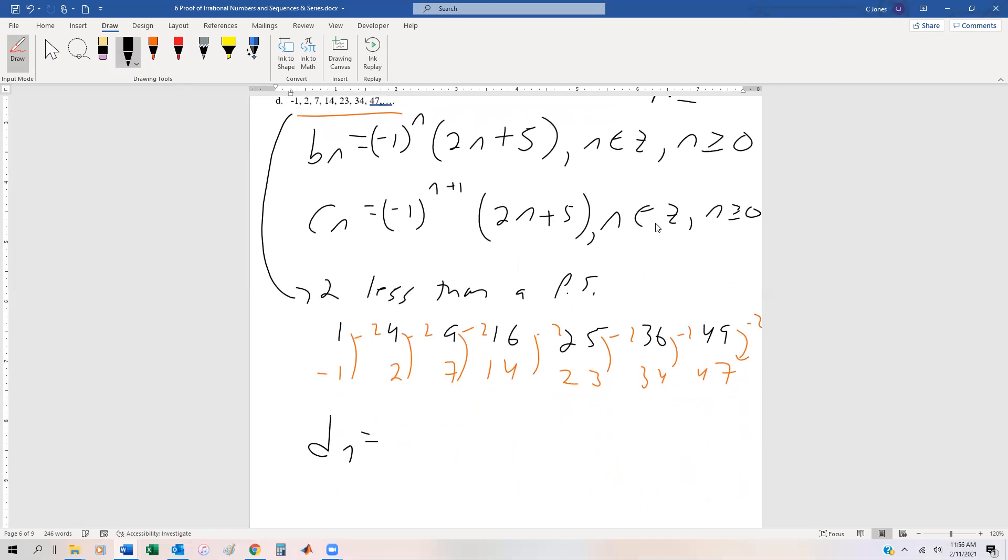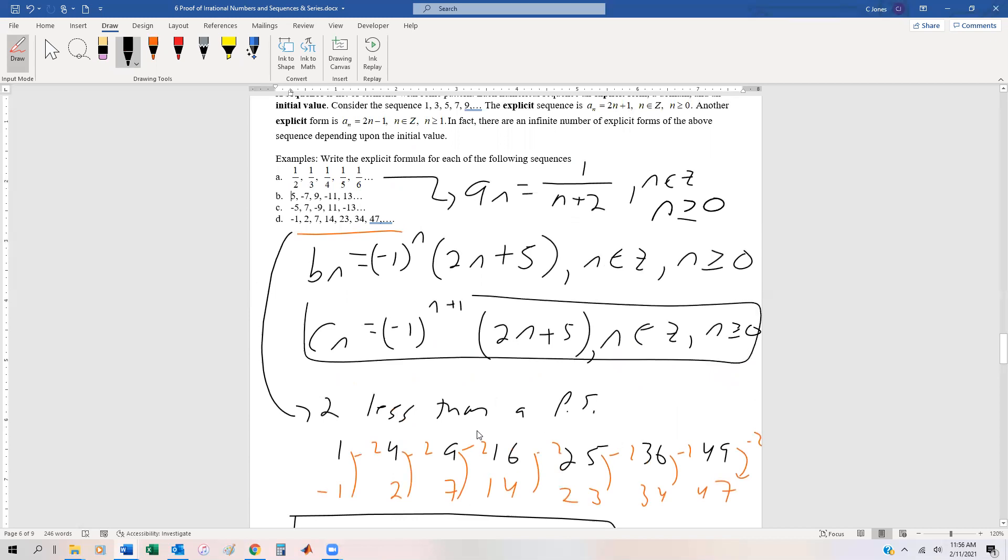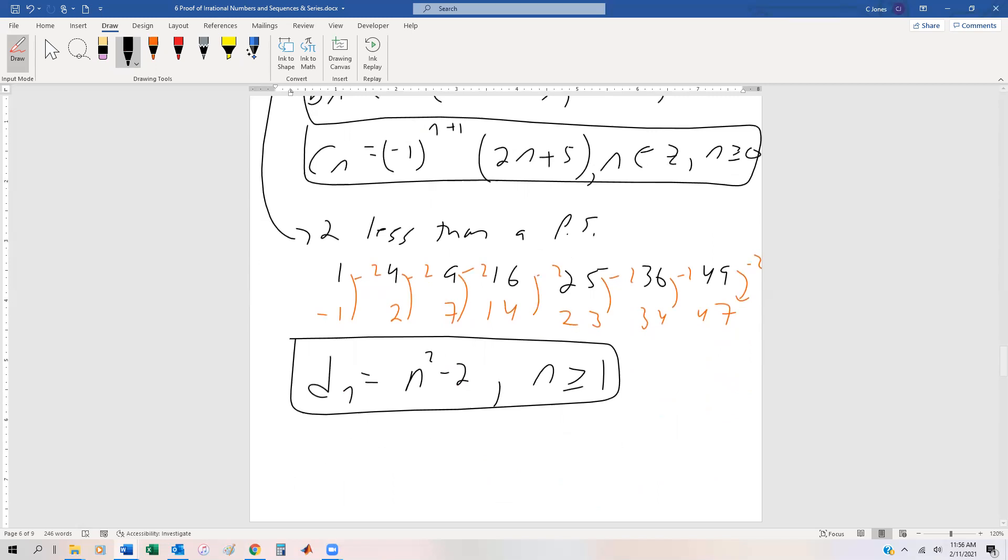So for us to define d sub n, that's going to be n squared minus 2. And in fact, we don't even need the parentheses because we're not multiplying by anything. And we probably want to start with 1 because we want to make sure we get a negative 1 and then a 2. So let's just say n is greater than or equal to 1 for this one. So these are our explicit sequences. Again, make sure that you define both the initial value as well as being able to define what the domain of this is. In the next video, we're going to start taking a look at the idea of series, which is basically just adding up all the terms in a sequence.